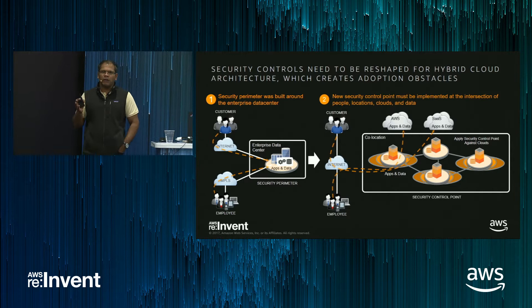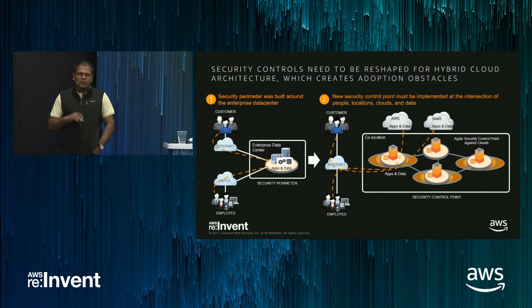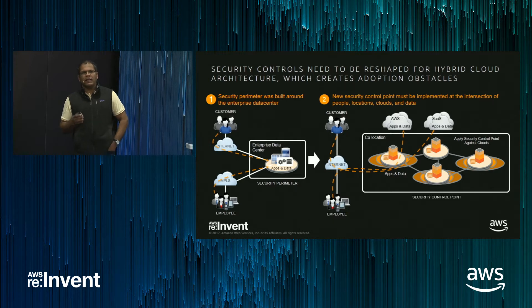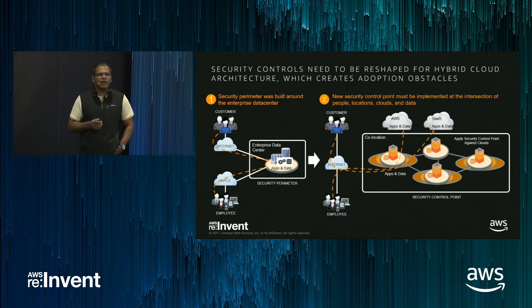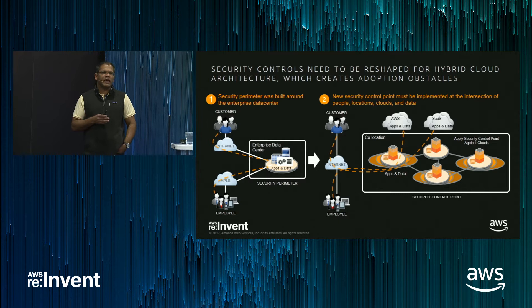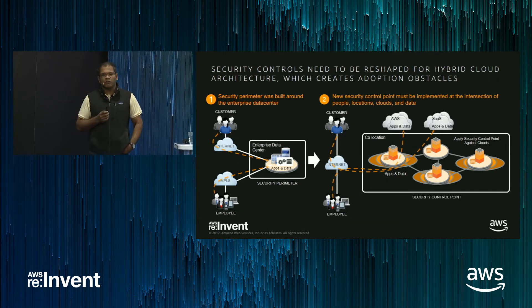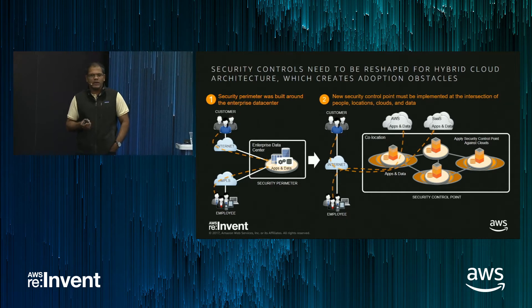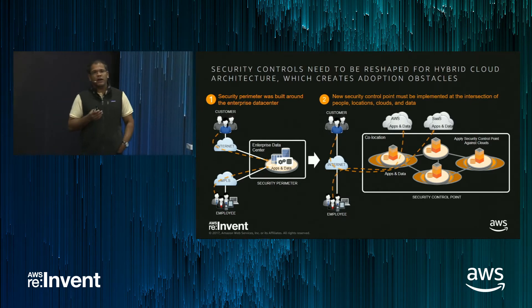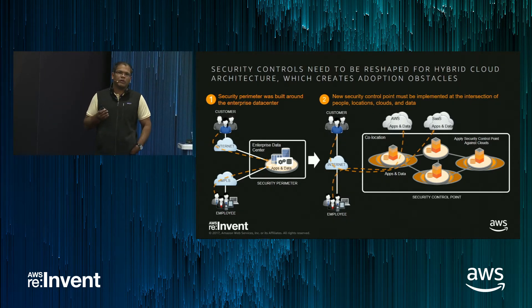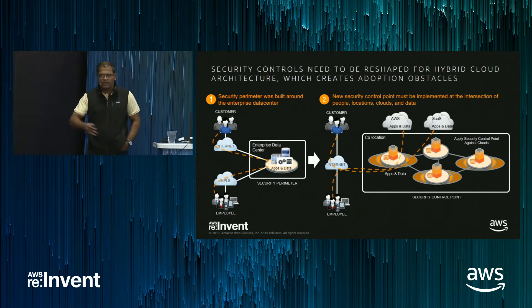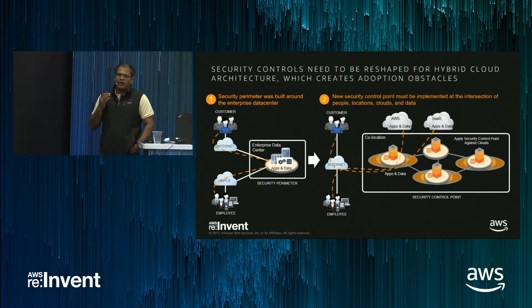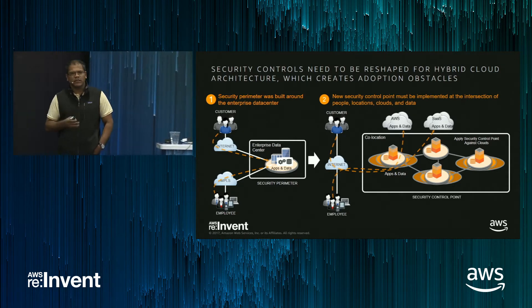Whether it be infrastructure as a service or SaaS, the data is moving there — along with your personal information, your PCI data, your intellectual property, and other sensitive assets. This is also causing application sprawl because those applications that used to be in your enterprise no longer reside in your own data center; they are now in a public cloud or in a SaaS. Since that infrastructure is not in your control, you don't know who's accessing it. It could be an employee of the service provider tasked with protecting your information, but you don't know who that person is.